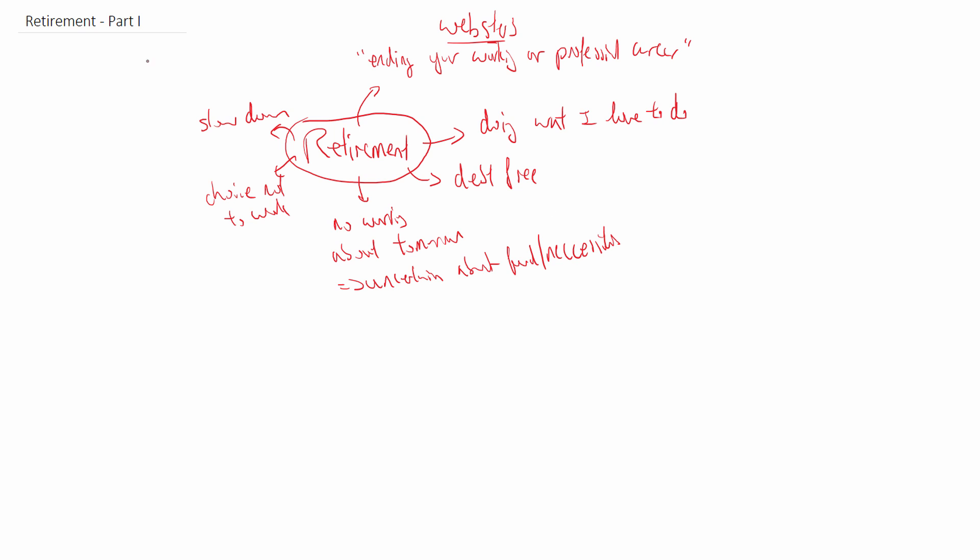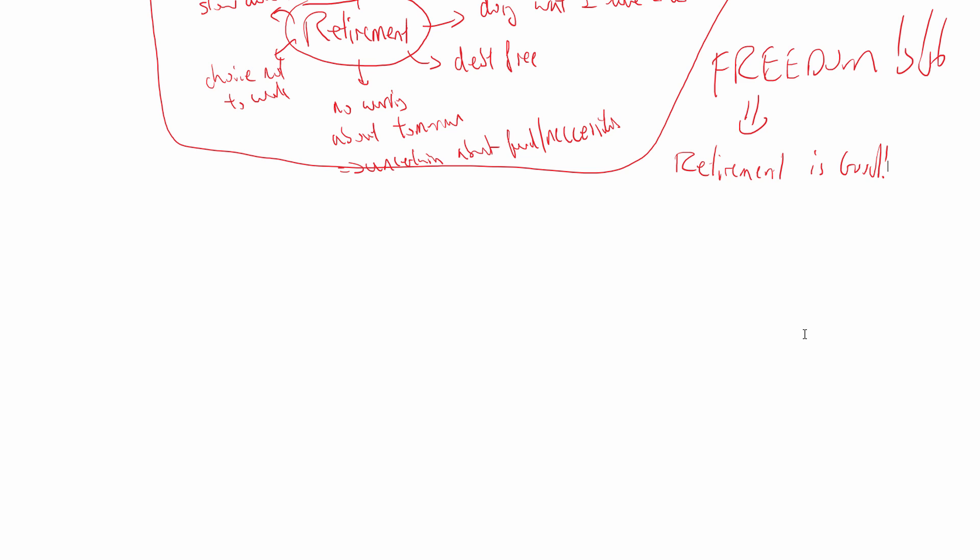So basically these are some general definitions of what people would think about in terms of retirement. I can put all this into a nutshell and say that essentially retirement means freedom. Freedom to do what you want to do, freedom to take a slow pace in life, freedom to be financially free, debt-free and so on. In fact, because of this, we see that retirement is good and should be desired. It should be everybody's dream to be able to retire in comfort and financial freedom.